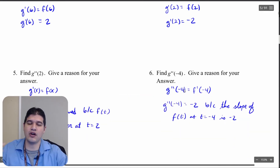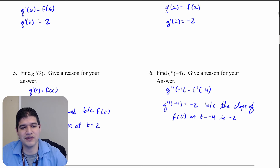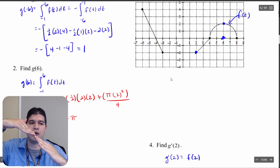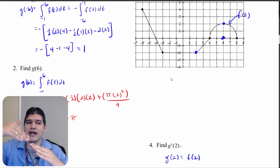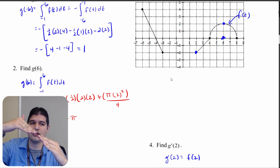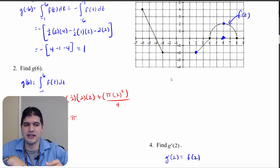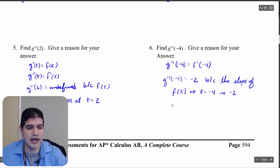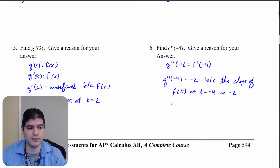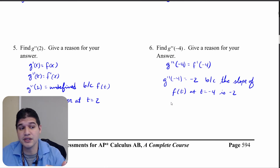For the second derivative of g at negative 4, I need f prime of negative 4. Looking at negative 4 on the graph, f of t is on a linear path — it's not an endpoint or a corner, so I can find the slope. That slope comes out to be down 2 over 1, so negative 2. Therefore g double prime of negative 4 equals negative 2.